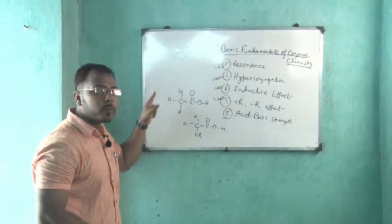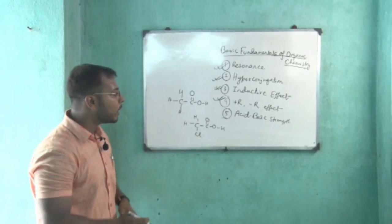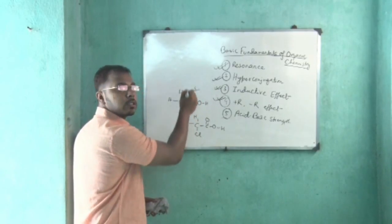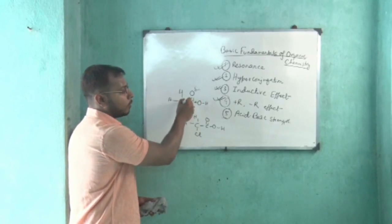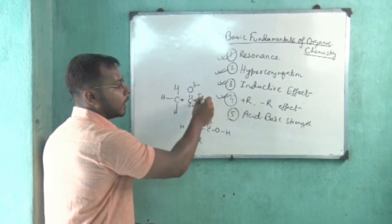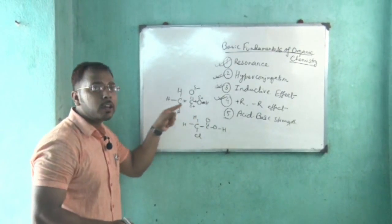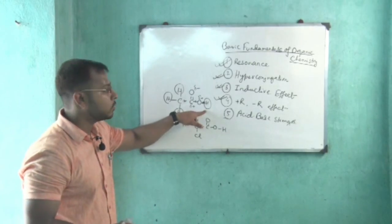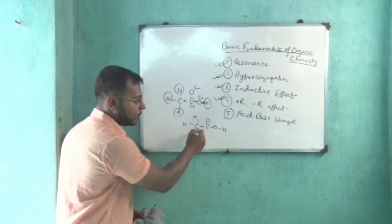In acetic acid, no minus I group is present. But in monochloroacetic acid, chlorine is present and has minus I effect because chlorine is more electronegative than carbon. Between oxygen and carbon, oxygen is more electronegative, so electrons are attracted towards oxygen, creating a positive charge on carbon. To neutralize this, carbon attracts electrons from the chlorine side as well, making the oxygen on the other side also have a partial positive charge. This oxygen then attracts electrons from the hydrogen to neutralize that charge, making the O–H hydrogen acidic.